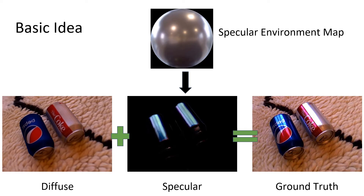The basic idea is to model the specular component of each viewpoint using material-specific environment maps that represent incoming lighting convolved with the specular BRDF. The specular highlight of a viewpoint is rendered by reflecting the camera ray about the surface normal and simply looking up the direction in the specular environment map.